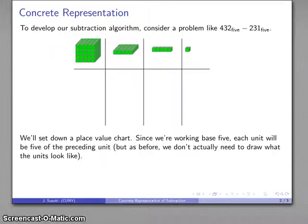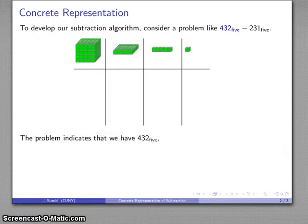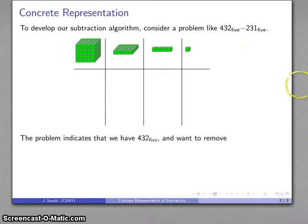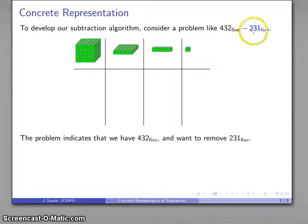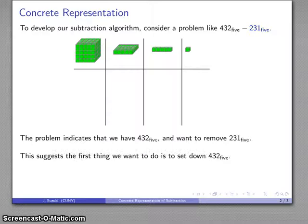And the numbers that I have here are going to be 432 base 5, that's 4 of these, 3 of these, 2 of those. And I want to remove 231 base 5, 2 of these, 3 of these, and 1 of these. So let's take a look at that.